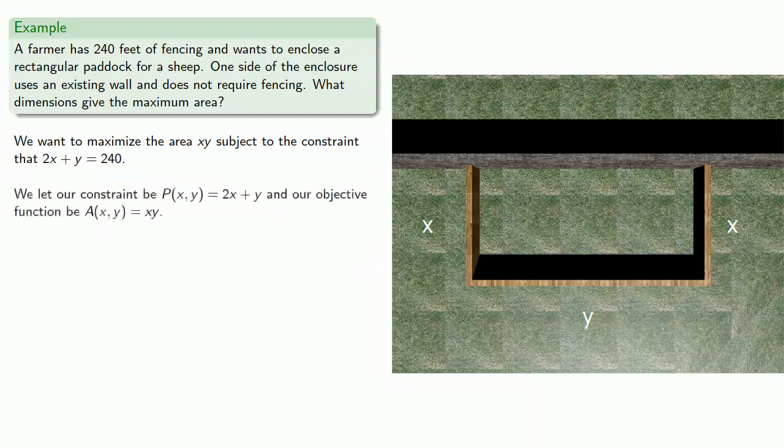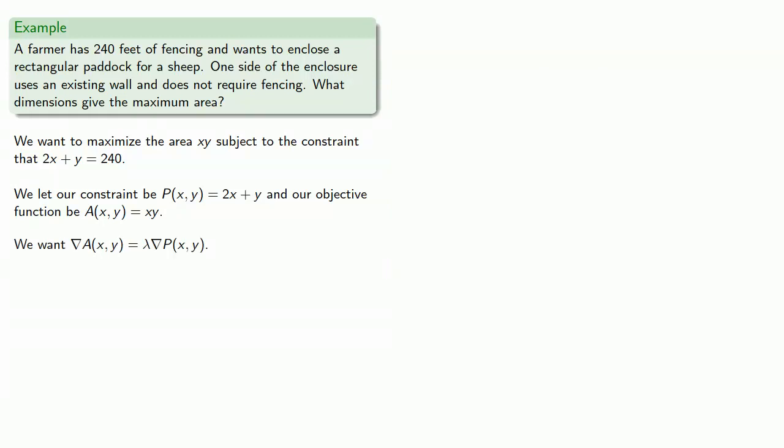So we'll let our constraint be P(x,y) equals 2x plus y, and our objective function A(x,y) equals xy. And so we want the gradient of A to be some constant times the gradient of P. Now we know what A and P are, so we can find the gradients.